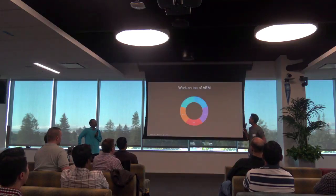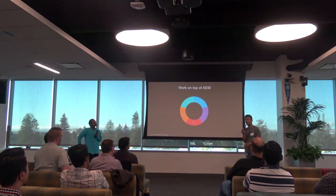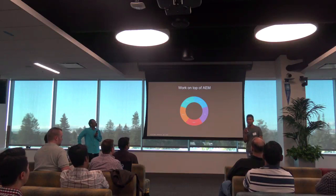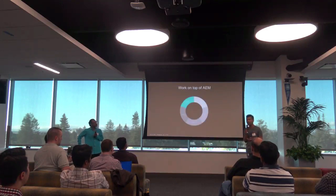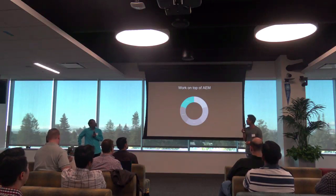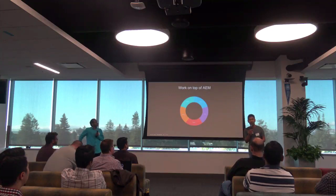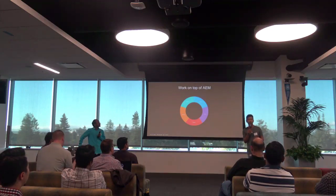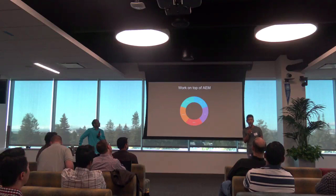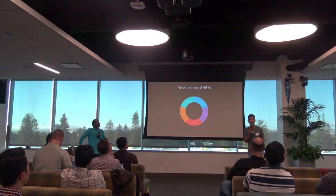Behind the scenes, our work on top of AEM follows a typical development cycle with a few phases: develop, build, test, deploy, and monitor. Develop is where we implement LinkedIn-specific features on top of AEM and integrate with LinkedIn technologies. Build is where we generate artifacts. Test is where we assure quality. Deploy is where we install artifacts to production instances. And monitor is where we watch the performance of our sites.